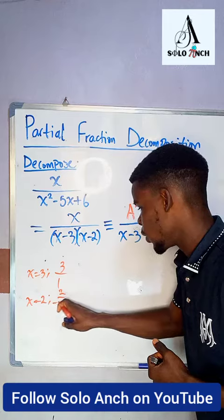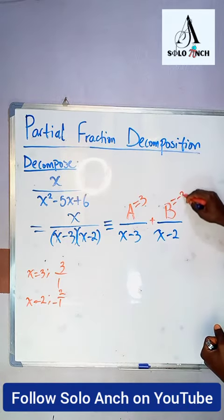So that'll be 2 divided by, well, 2 minus 3 is negative 1, that is negative 2 for B. So B is negative 2.